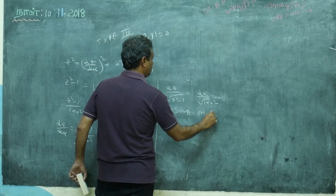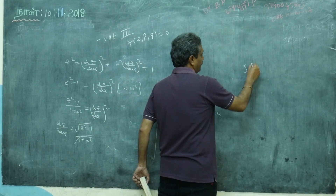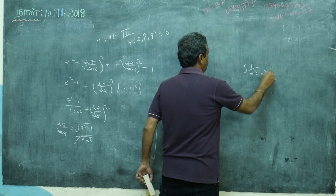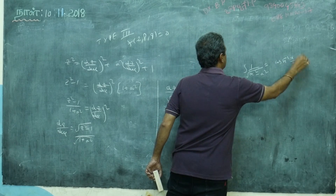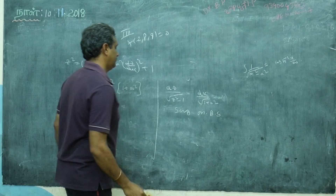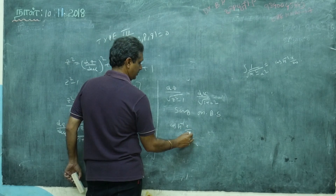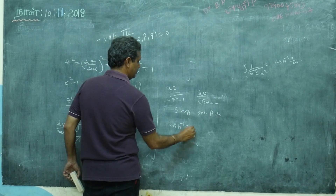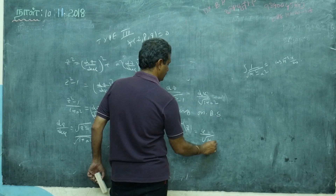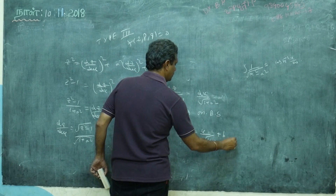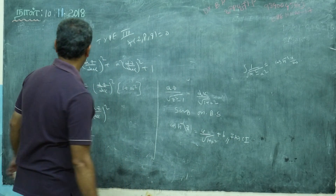Integrating on both sides. The integral of 1/√(z² − 1) dz is cosh⁻¹(z). So integrating both sides gives: cosh⁻¹(z) equals u divided by √(1 + a²) plus b, where b is the constant of integration.